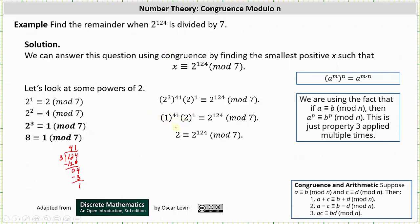We now have 2 is congruent to 2 to the power of 124 mod 7, and we're done because 2 is greater than or equal to 0 and less than 7. We now know when 2 to the power of 124 is divided by 7, the remainder is 2. I hope you found this helpful.